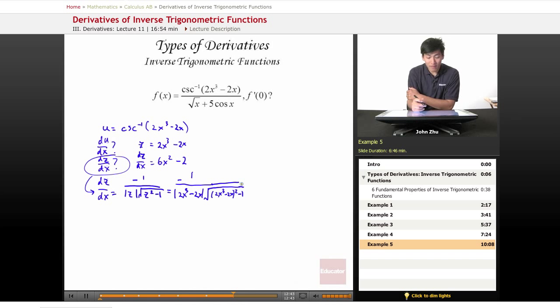And there we have this full expression with only the variable x in it. So this is the derivative of our cosecant inverse term. Well, we have another term here on the bottom, on the denominator, that's square root of x plus 5 cosine of x.